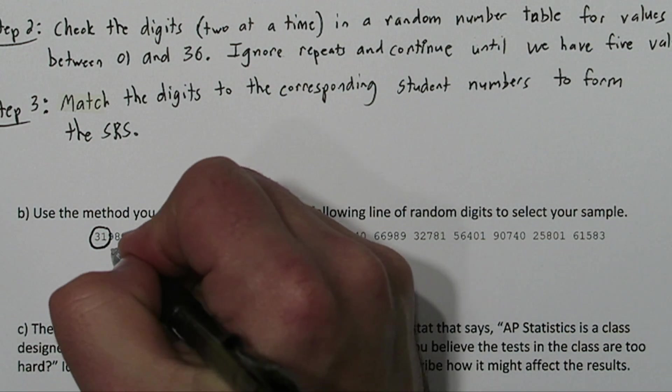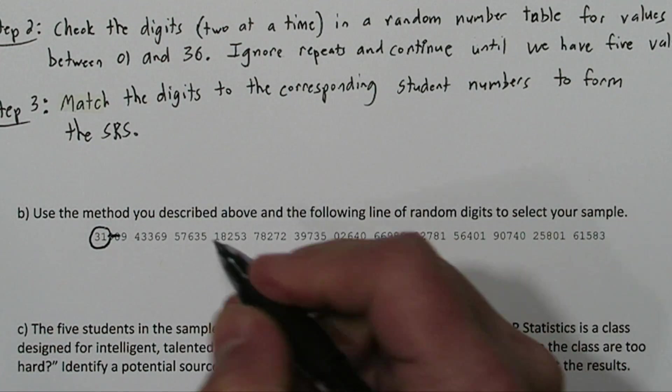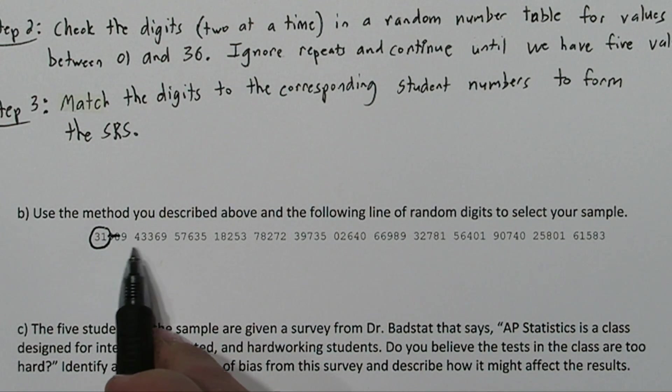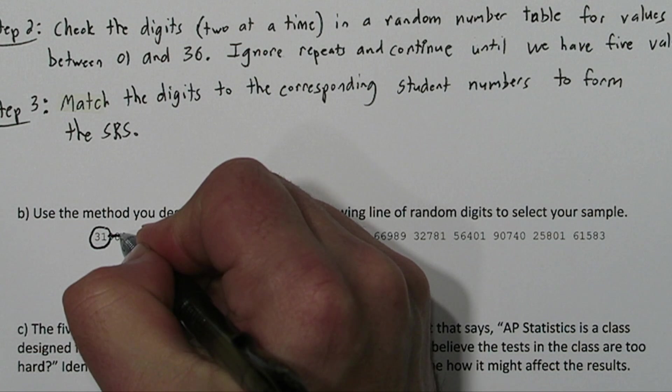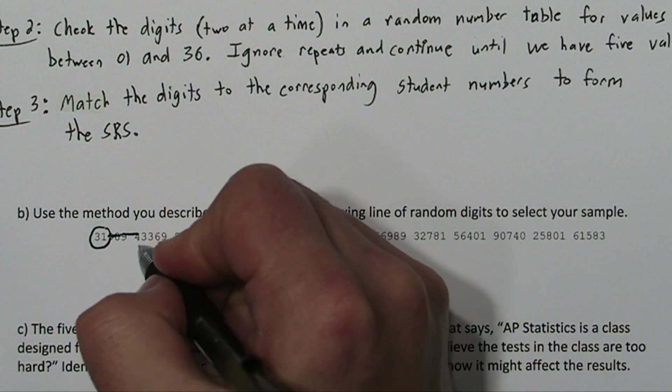The next two digits are 98, so we'll just cross those out. Now we have a 94. The 9 is here and there's the 4, so we'll cross out 94. Now we have 33. That works.